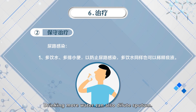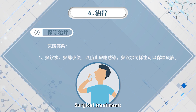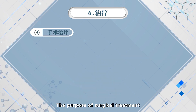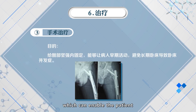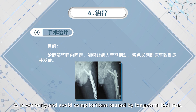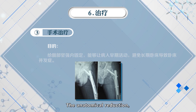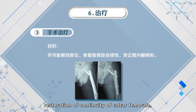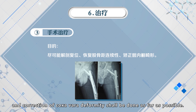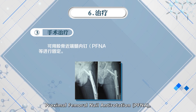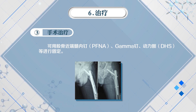Drinking more water can also help dilute sputum. For surgical treatment, the purpose is to provide the hip with strong internal fixation, which can enable the patient to move early and avoid complications caused by long-time bed rest. Anatomical reduction, restoration of continuity of the calcar femorale, and correction of coxa vara deformity shall be done as far as possible. Proximal femoral nail anti-rotation (PFNA), gamma nail, and dynamic hip screw can be used for fixation.